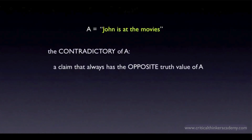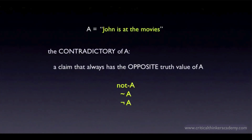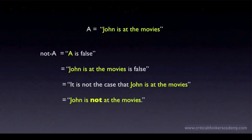There are a couple of different ways that people write the contradictory of A. We're going to write it in English as 'not A.' But in textbooks and websites that treat logic more formally, you'll likely see 'not A' written with the tilde — that wavy symbol — or as a corner-of-a-rectangle shape. The contradictory asserts that the claim A is false. You can read it as 'A is false,' or 'John's at the movies is false,' or 'It is not the case that John is at the movies,' but the most natural formulation is 'John is not at the movies.'